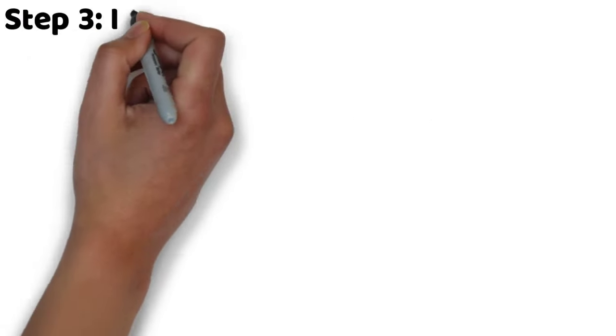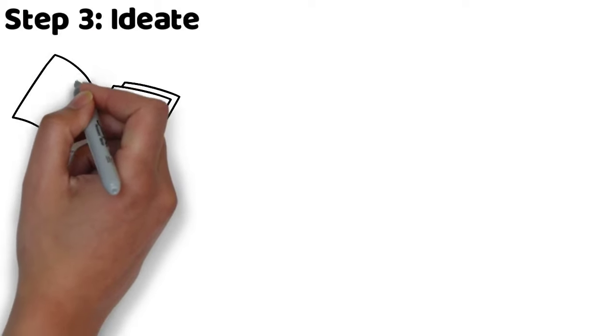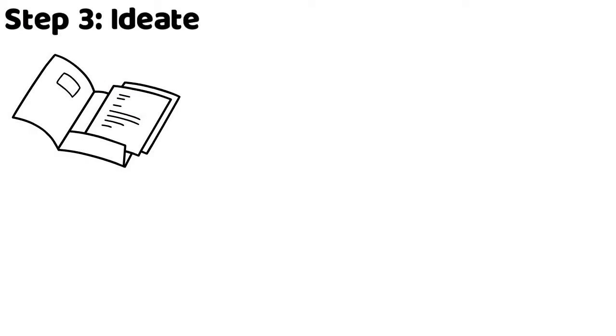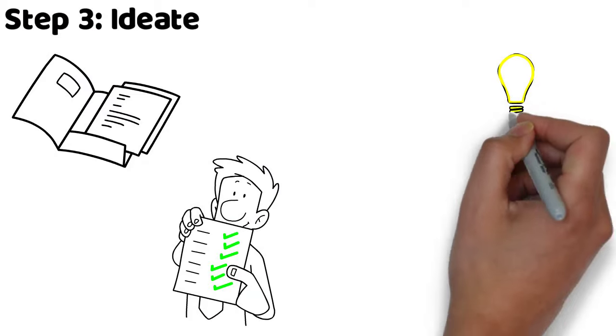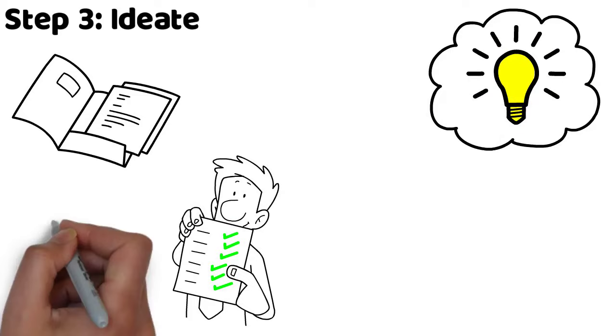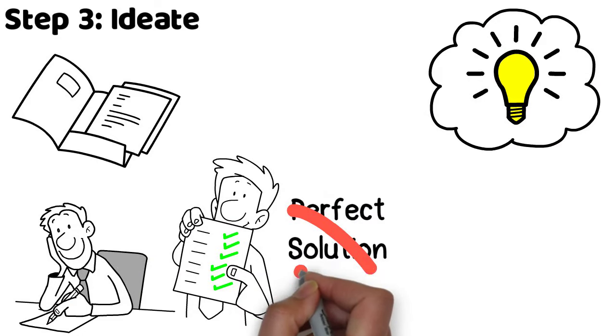Step 3, ideate. Once you have created your problem statement, you can start coming up with solutions. Only come up with ideas related to the problem statement. In the ideation stage we are looking to have lots of ideas and aim to write down as many as you can. Don't become fixated on the perfect solution.